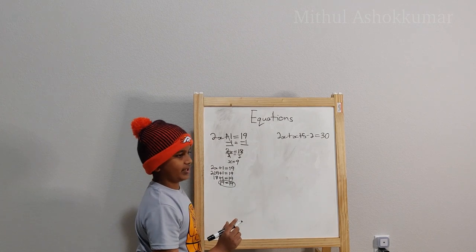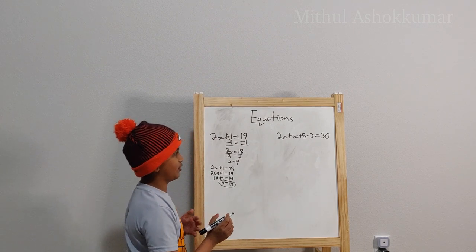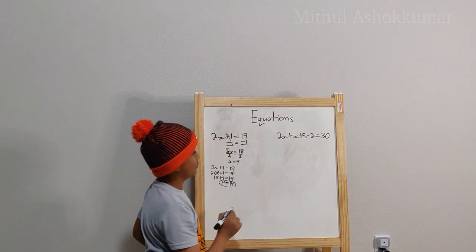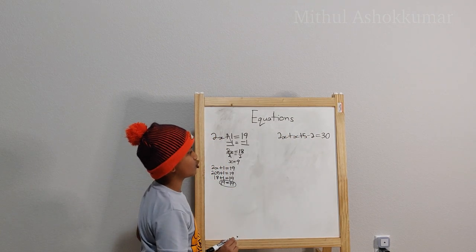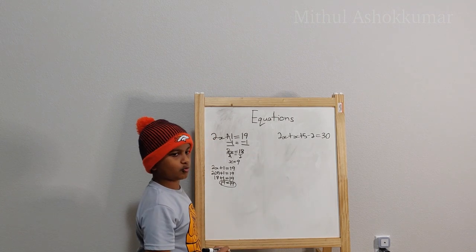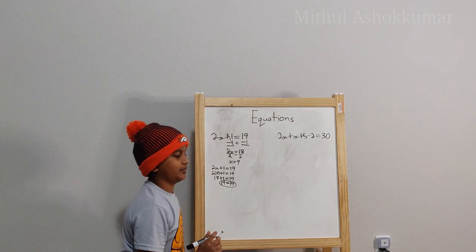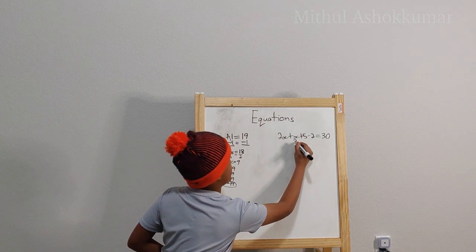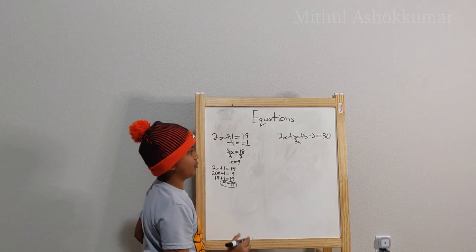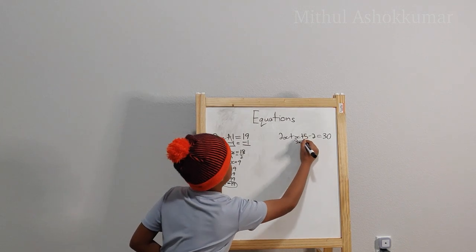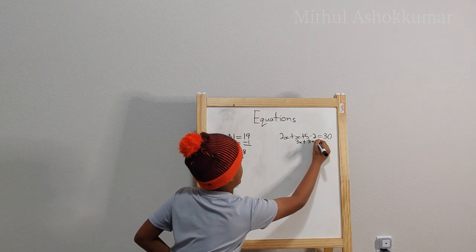So I want to get x by itself and I want to shorten this out. So what we'll do is we have a 2x here and an x, so we'll just add them together. So we have 2x plus x which equals 3x and then we have 5 minus 2. So 5 minus 2 is 3 plus 3 which equals 30.